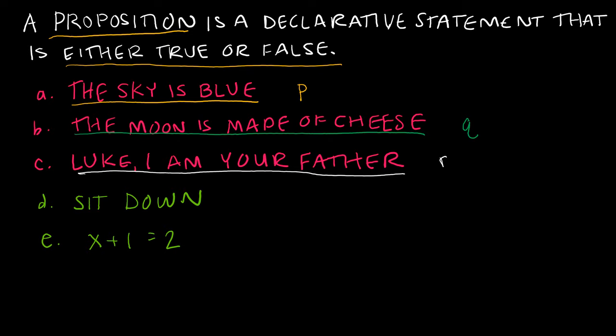Now take a look at the difference of the statements written in green. D says 'sit down.' Sit down is a statement, but it is neither true nor false. I can't say true — the statement would have to be 'you sat down' for it to be either true or false. But 'sit down' is just telling you what to do, and that is not a proposition.